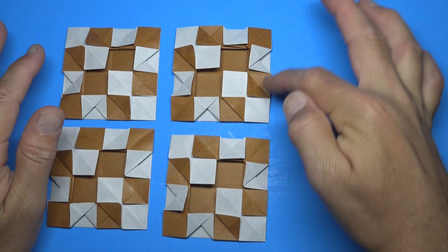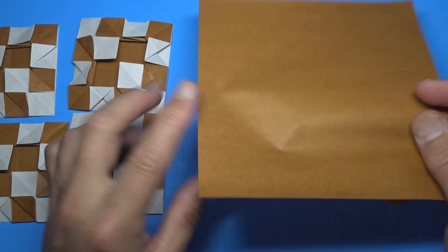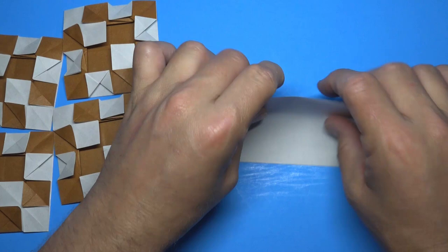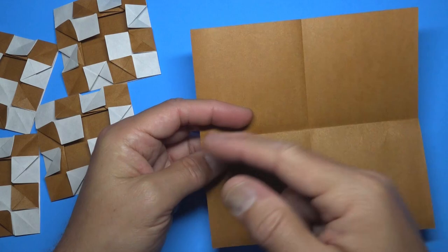Alright, so we got our four 4x4 chessboards, and now time to connect them together with our connector piece, which we're going to divide into four pieces. So fold in half and unfold, and fold in half in this direction. Now you could get scissors and just cut it into fourths, but I'm going to show you how to tear it.